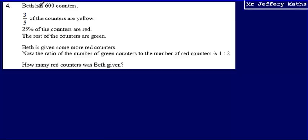This is question four. Here we're told that Beth has 600 counters. We're told that three-fifths of the counters are yellow, that 25% are red, and that the rest are green. We're then told that Beth is given some more red counters, and that when she's given more red counters, the ratio of the number of green counters to the number of red counters is one to two. Then we're asked how many red counters was Beth given?